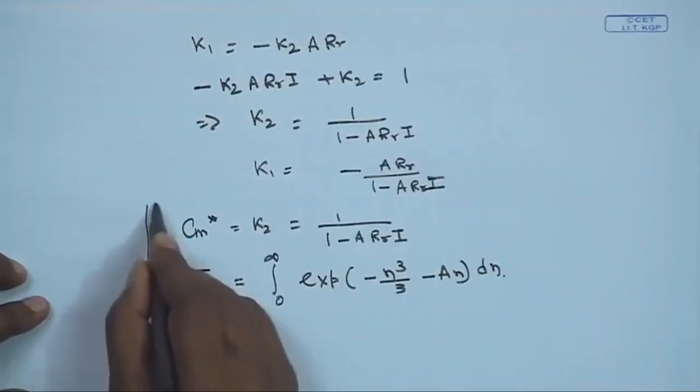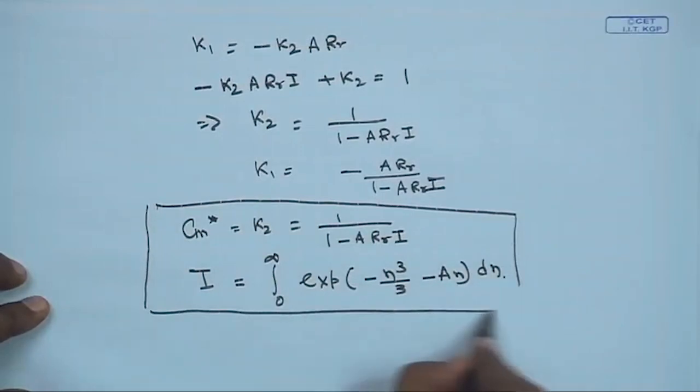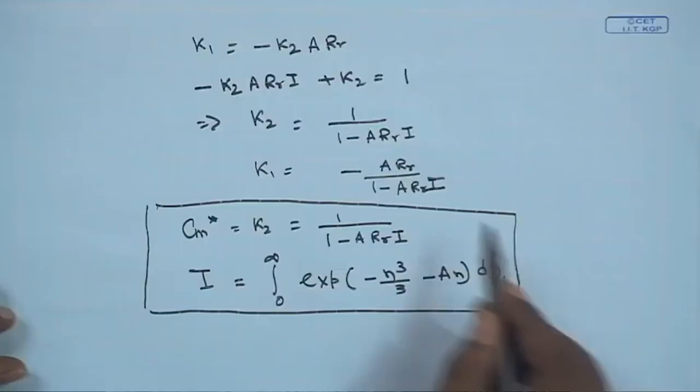We have evaluated the concentration profile in the mass transfer boundary layer as c*(η), where η varies as y/x^(1/3), and evaluated the concentration at the membrane surface cm* as a function of k₂, Rr, and the integral I. In the next class, we will see how this expression can be connected with the transport through the porous membrane to predict overall system performance. Thank you very much.